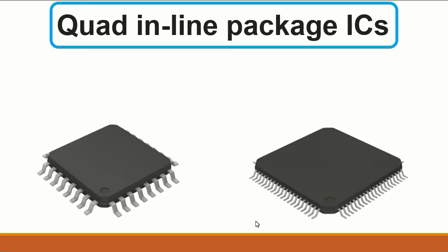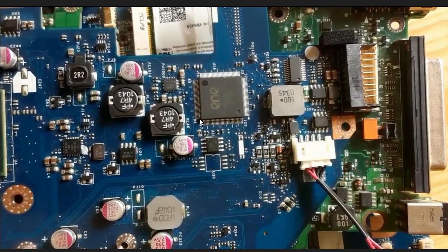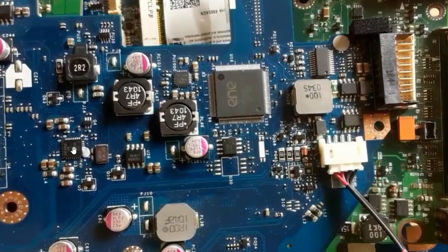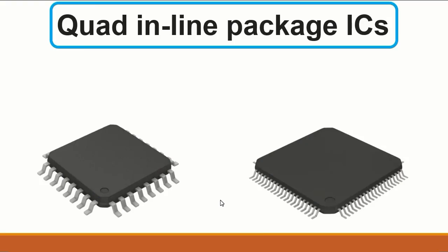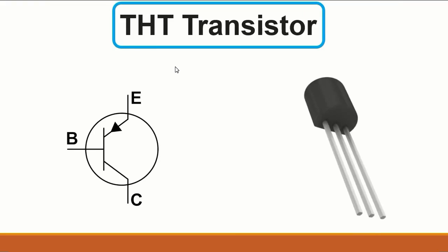The next kind of IC is the Quad Flat Package, or QFP. 'Quad' means the pins or terminals are on all four sides. If we go to the motherboard here, you can see the quad flat package ICs — notice the pins are on four sides.